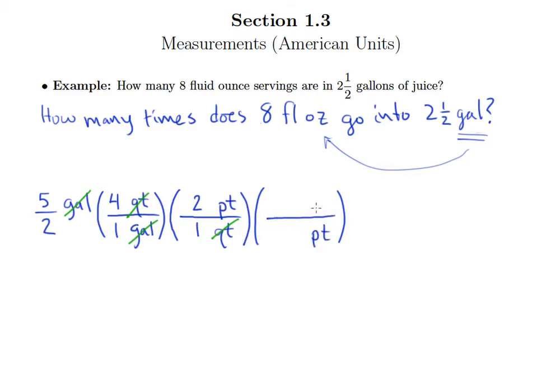And then from pints, go to cups. And so we know there are two cups in one pint. Pints cancel out. And now we're almost there because the next unit below cups is fluid ounces. So cups on bottom, fluid ounces on top, and there are eight fluid ounces in one cup. So finally, we have the unit we need. We've got it in fluid ounces.